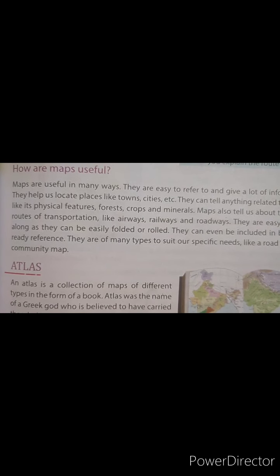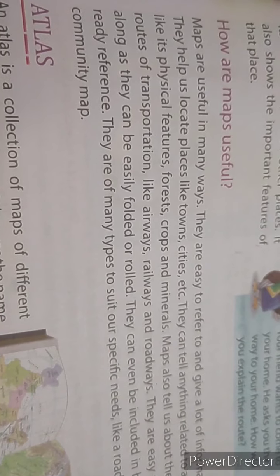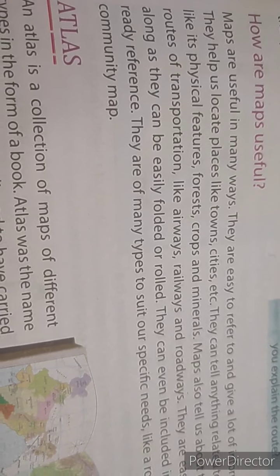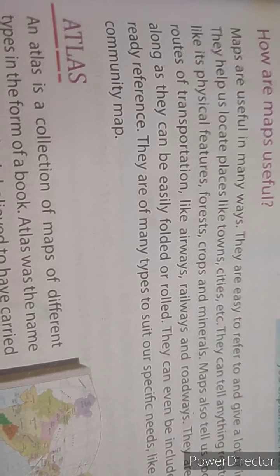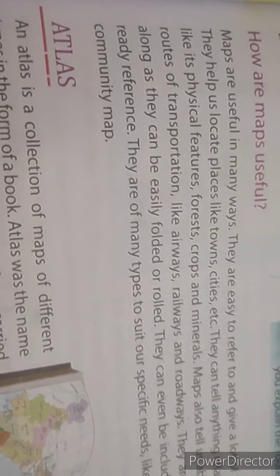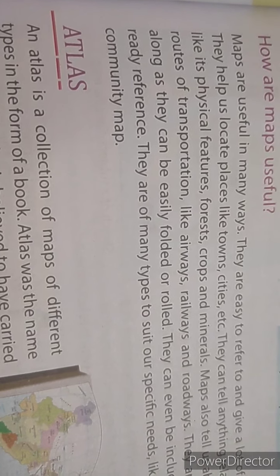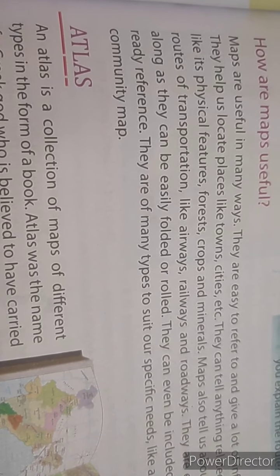Maps are of many types to suit our specific needs, like a road map or a community map. Maps are very useful — they show us where different cities, towns, and villages are. They show physical features like where the forest is, where the factories are, where the coal mines and gold mines are. They even show the routes of transport like airways, railways, and roadways. And a map is very, very easy to carry — we can carry it anywhere.